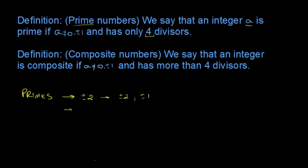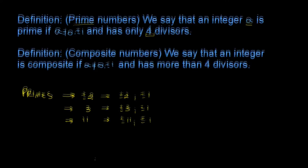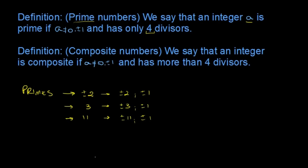Another example: 3 has 4 divisors, ±3 and ±1. And 11 also has 4 divisors, ±11 and ±1. So these 4 divisors will always have 2 positives and 2 negatives. The prime p will have divisors ±p and ±1. This is another way we can define prime numbers — those that have only these divisors.